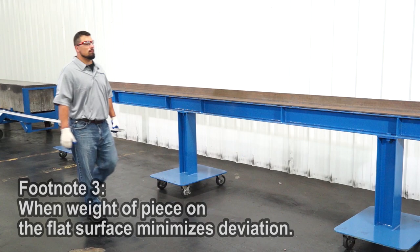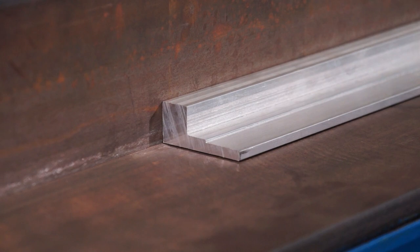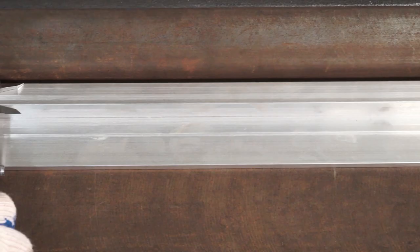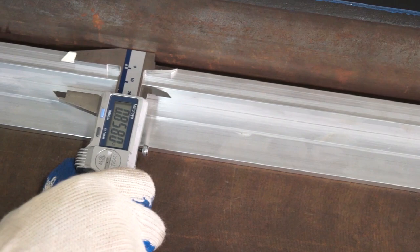Footnote 3: When weight of piece on the flat surface minimizes deviation. A common misinterpretation is to place the piece on a calibrated flat surface table in a horizontal position and then measure horizontally what appears to be a bow against the calibrated fixture side wall. This is incorrect.